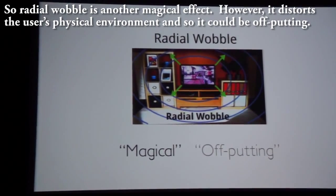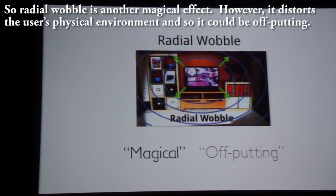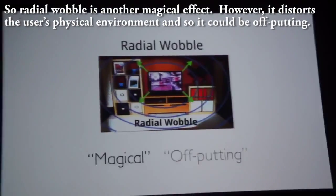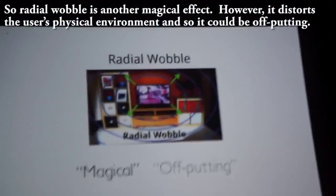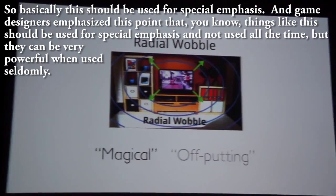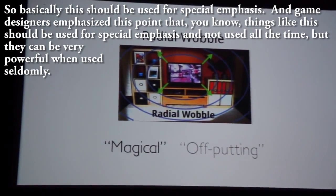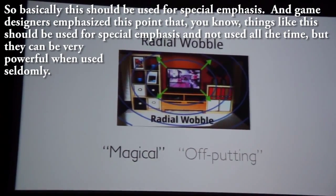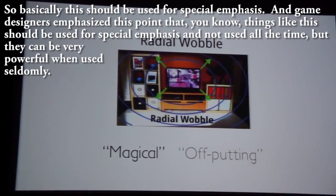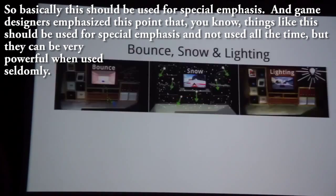Radial wobble was another magical effect; however, it distorts the user's physical environment and so it could be off-putting. It should be used for special emphasis. Game designers emphasized that things like this should be used for special emphasis and not all the time, but they can be very powerful when used seldomly.